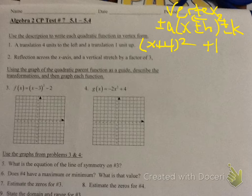Reflection — what does that mean? First thing you put is a negative at the very front. Then vertical stretch — that's the number in front of x squared. The vertical stretch is 3, so put a 3. That's all you need for number 2: negative 3x squared.